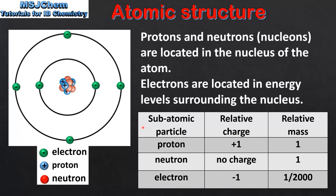In this table we have the subatomic particle, its relative charge, and its relative mass. Protons have a relative charge of plus one and a relative mass of one. Neutrons have no charge and a relative mass of one. Electrons have a relative charge of negative one and a relative mass of approximately one two-thousandth the mass of a proton. By looking at these masses we can see that the nucleus is very dense and contains almost all the mass of the atom.